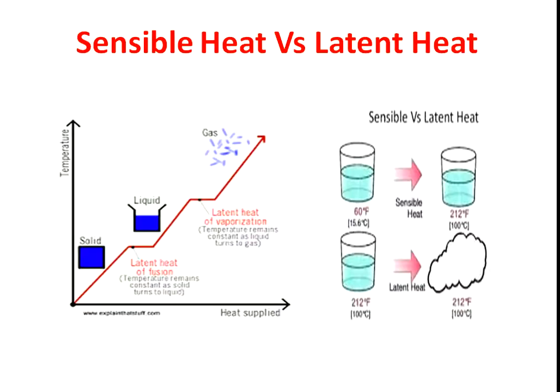First of all we will see sensible heat. Sensible heat is a heat which can be sensed by our measuring instruments like thermometer and sensors. Latent heat is a heat which cannot be sensed by measuring instruments like thermometer and sensors. In other words, sensible heat can be defined as the heat utilized by any substance or liquid to bring its temperature to its boiling point.